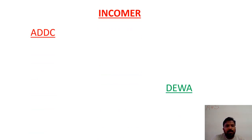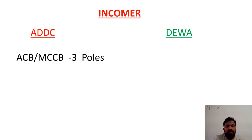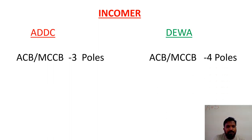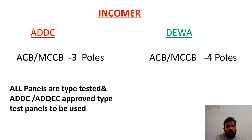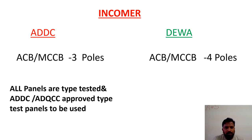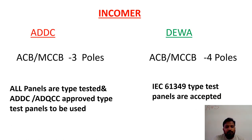Regarding the incomer, for ADDC the incomer ACB should be three pole, whereas for DEWA the ACB or MCCB should be four pole. All ADDC panels must be ADDC and ADQCC approved type-tested panels — otherwise they are not accepted. For DEWA, if the panel is type-tested or listed — such as DECRA and similar — and is IEC 61439 compliant, then it is accepted.